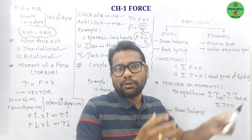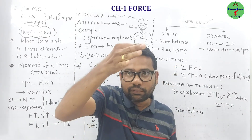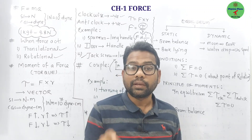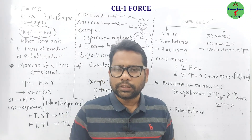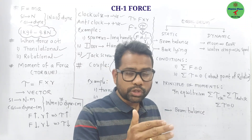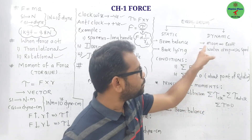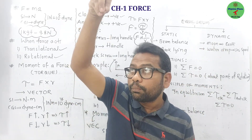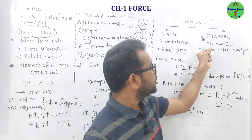Examples of static equilibrium: a book lying on a table, and a beam balance in equilibrium — when you are measuring, both pans are at the same level, and the beam is in static equilibrium. In dynamic equilibrium, the forces acting on a body do not change its state of uniform motion or uniform circular motion. Examples: the moon revolving around the earth, and a water drop falling with uniform speed near the earth's surface.